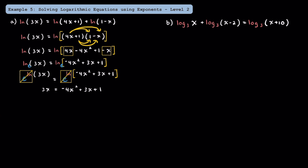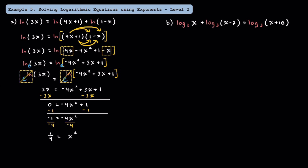At this point, let's solve this like a quadratic equation. Subtracting 3x from both sides, we get 0 is equal to negative 4x squared plus 1. Since we have no b term, we can solve by using square roots. Subtracting 1 from both sides, we get negative 1 is equal to negative 4x squared. Dividing both sides by negative 4, we get 1 fourth is equal to x squared. Taking the square root of both sides, we find that x is equal to positive 1 half or negative 1 half.